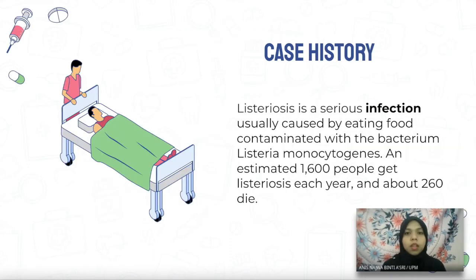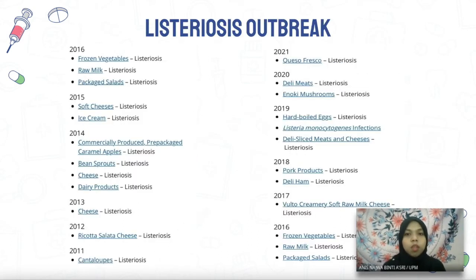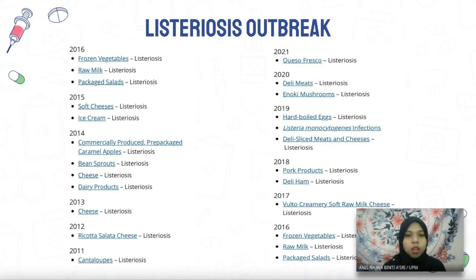An estimated 1,600 people get Listeriosis each year, with about 260 deaths. From the slide, you can see a record of Listeriosis outbreaks from 2011 to 2021. In 2011, a cantaloupe outbreak due to Listeria resulted in 147 people sick across 28 states and 33 deaths.